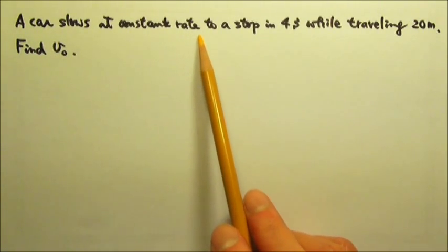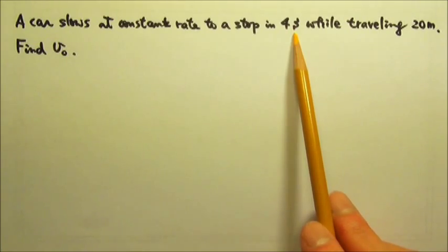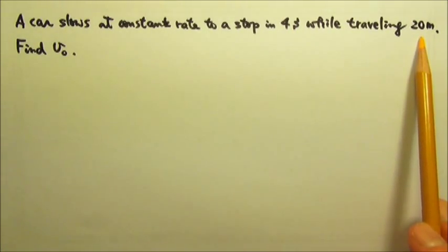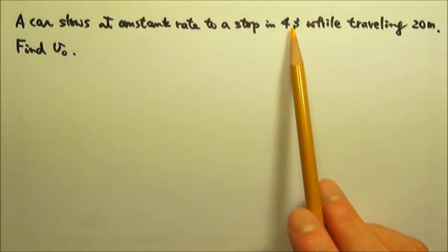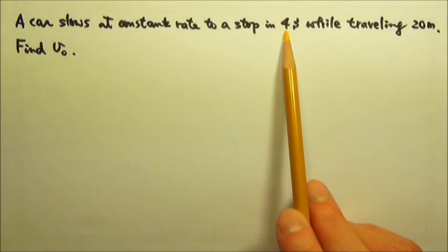A car slows at a constant rate to a stop in 4 seconds while traveling 20 meters. We want to see if we can find the initial velocity, the velocity at the beginning of the 4 seconds.